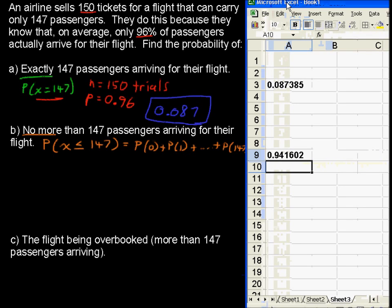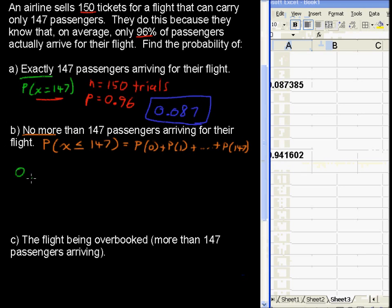and we get an answer. .94. And that kind of makes sense. 94% of the time, we'll have no more than 147. So, that is .942 rounding.